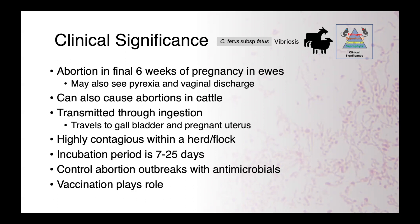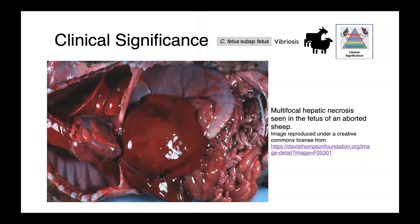Abortion outbreaks can be controlled with antimicrobials, and vaccination also plays a role. This is an image from an aborted lamb showing multifocal hepatic necrosis — little foci of coagulation necrosis in the liver that are clearly abnormal. So in the abortus, we can see pathological lesions associated with these infections.